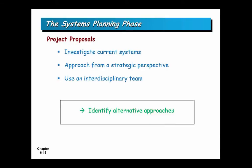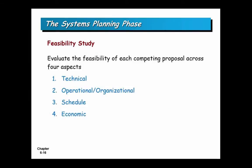In systems planning, you get project proposals by looking at current systems, understanding which are working and which aren't, from a strategic perspective, using interdisciplinary teams — not just technologists, but technologists working side by side with various parts of the business. You identify different approaches for solving strategic problems. You then perform a feasibility study. At every step in the SDLC, there are checkpoints where you step back and ask: does this make sense? Feasibility is assessed on four aspects: technical, operational, schedule, and economic.